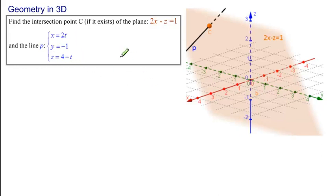This is a continuation of the problem before where we found this plane, 2x minus z equals 1, through a point down here, P, and normal to the line P.